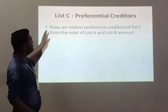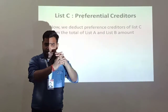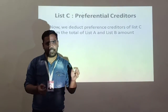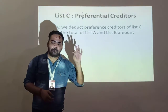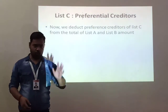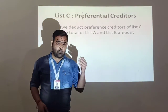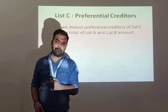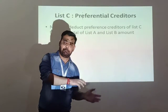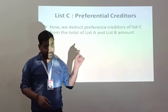After adding List A and the surplus of List B, we will deduct the preferential creditors first. Preferential creditors is the most important topic of this chapter. Preferential creditors are those creditors who are quite needy, like governments, wages, salary, leave salary, workman compensation fund, or any other funds. I will teach preferential creditors in a separate video.